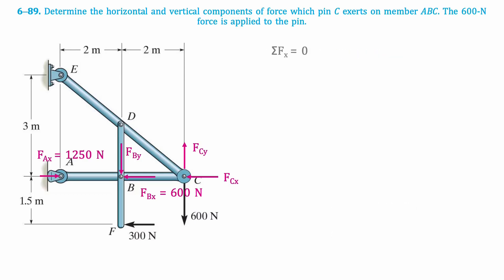Then we can take the sum of horizontal forces and solve for FCX, which results in 650 newtons.